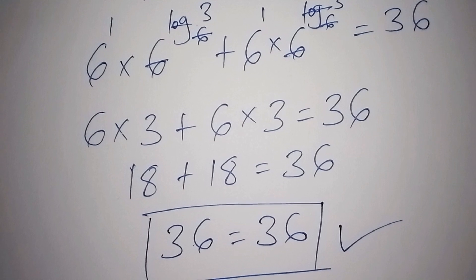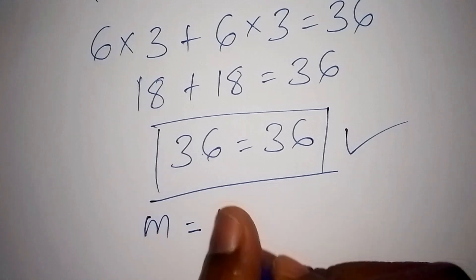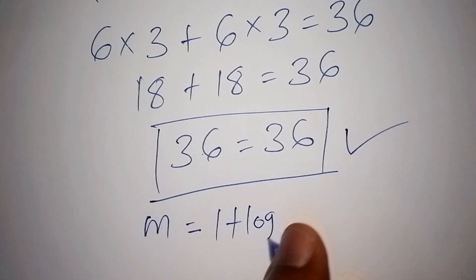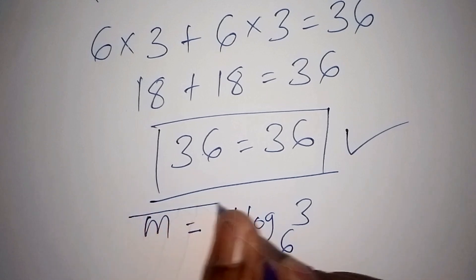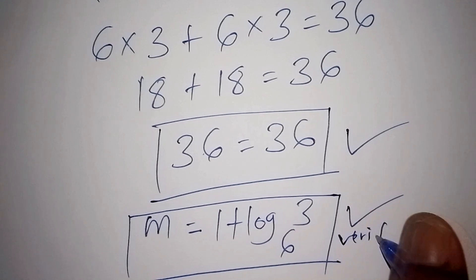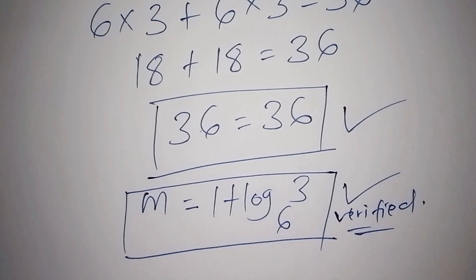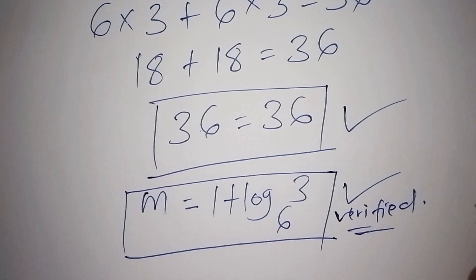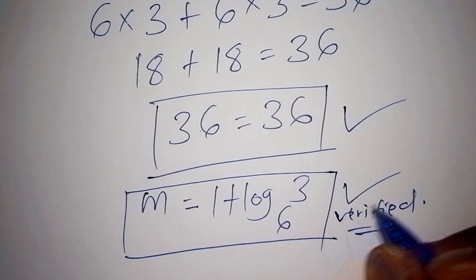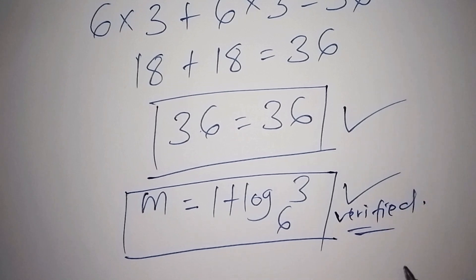We conclude that the value for m is equals to 1 plus the log of 3 to the base of 6. This answer is now verified and confirmed. If you have another way of working it out, please don't hesitate to share your answers in the comment section, because this math problem can have several methods, provided you use the correct method and arrive at the correct answer.